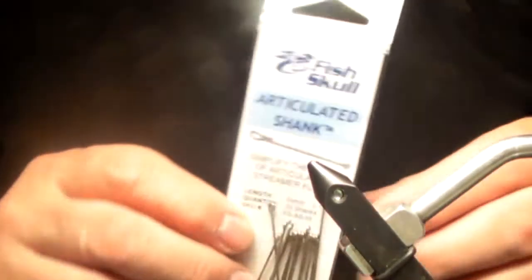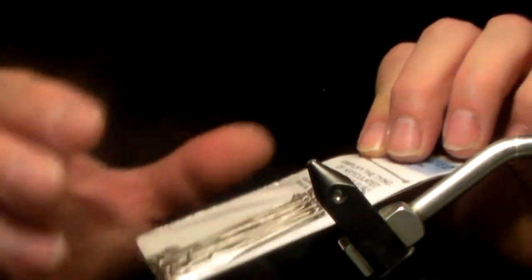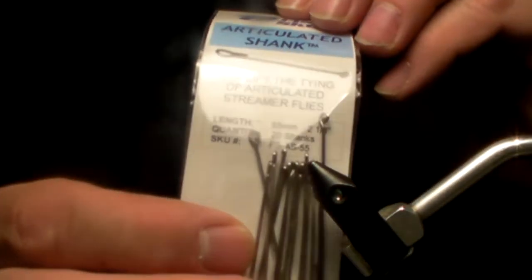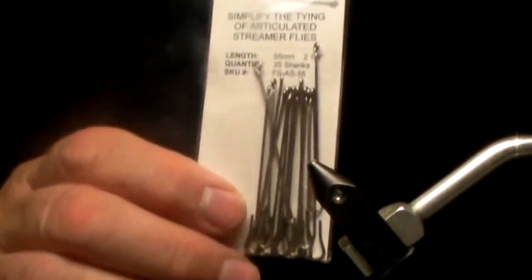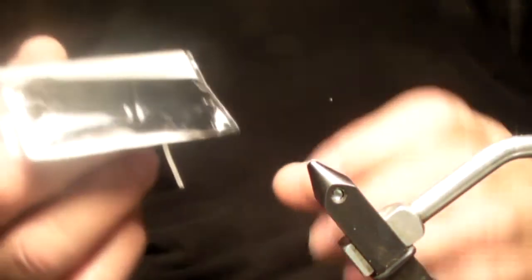There are a few different ways to achieve what we're going to do next. This is a fish skull articulated shank, but the eye is way too large and the diameter of the wire is way too large for trout flies. These are great for bigger steelhead flies. Same issue with waddington shanks - very heavy wire, big loops, just doesn't work for trout.